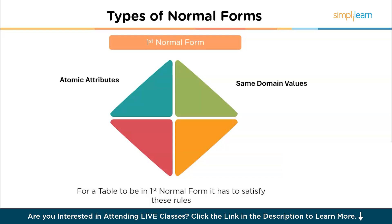The second rule is same domain values: all values stored in a specific column should be of the same data type or domain. For example, if a column is meant to store dates, all values in that column should be dates. Third, unique column names: each column in the table should have a unique name, ensuring clarity and avoiding confusion. Fourth, order of data doesn't matter: the order in which rows are stored should not affect the data or its integrity.